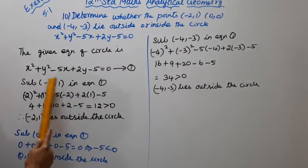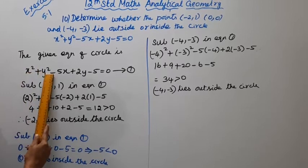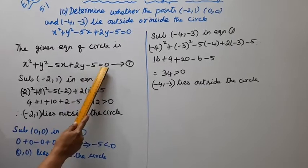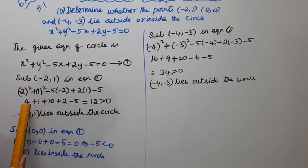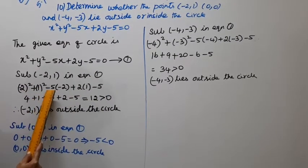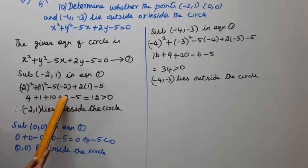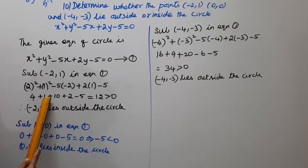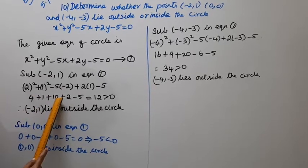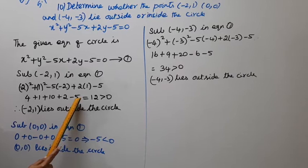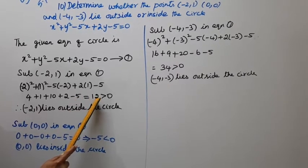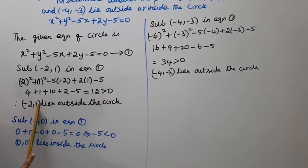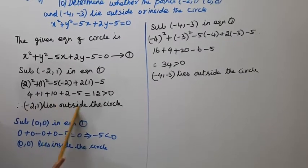For point minus 2, 1: minus 2 squared plus 1 squared minus 5 into minus 2 plus 2 into 1 minus 5 equals 4 plus 1 plus 10 plus 2 minus 5, which is 5 plus 10 plus 2 minus 5 equals 12. Since 12 is greater than 0, therefore minus 2, 1 lies outside the circle.